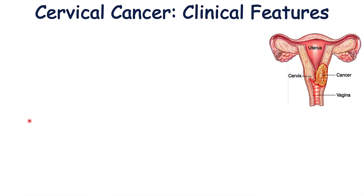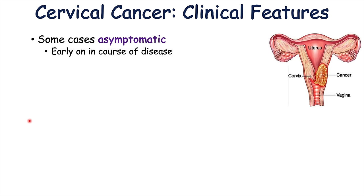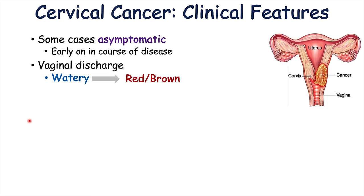Now let's talk about the clinical features of cervical cancer. Some cases, particularly early-stage, are asymptomatic. When symptoms are present, one of the first is vaginal discharge, which starts as watery and progresses to red-to-brown and malodorous discharge. There can also be abnormal vaginal bleeding, which is easier to detect in post-menopausal patients, and post-coital bleeding — bleeding after sexual intercourse — which becomes more frequent as the disease worsens.